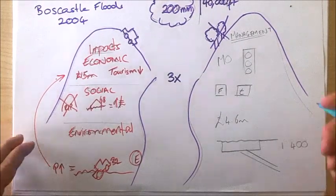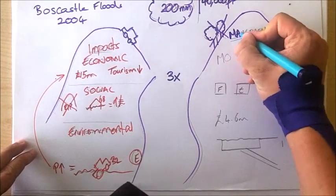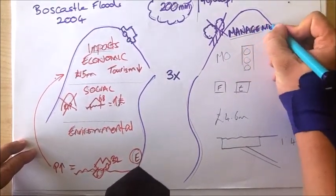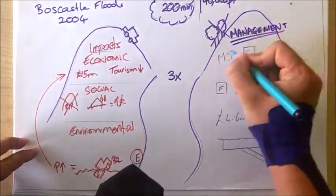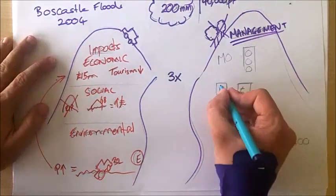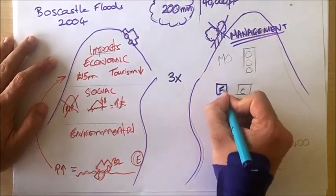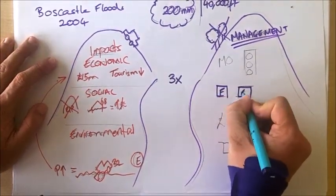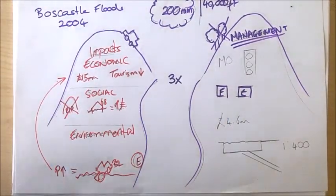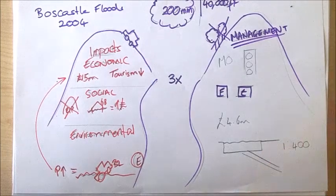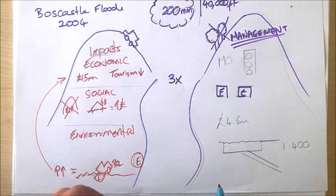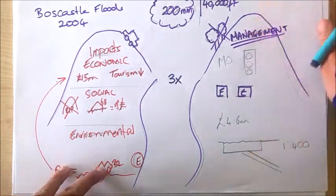So, moving on to management, and this hill over here, there's several different strategies that were used. Firstly, in the short term, social media apps like Facebook and Twitter provided locals with up-to-date information about the flood warning and risk. The Met Office used these social media platforms to warn people of the necessary need to evacuate and to avoid the area.